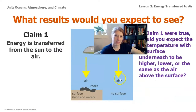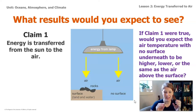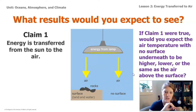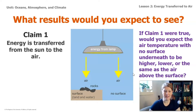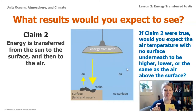Claim one says that energy is transferred from the sun to the air — as the energy travels across space from the sun, once it hits Earth's atmosphere, it begins to transfer energy, and the molecules in the atmosphere start speeding up, getting more kinetic energy, and therefore their temperature begins to increase. If claim one were true, would you expect the air temperature with no surface to go higher, go lower, or stay the same as the air above the surface? Take a moment to pause the video and record your ideas.